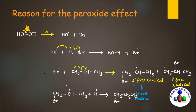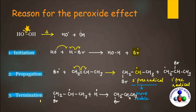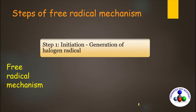This whole reaction completes in three steps. The first step is the initiation step, in which the Br free radical is formed. The second step is the propagation step, in which the Br free radical generates another free radical — the alkyl free radical. The final step is the termination step, in which the alkyl free radical combines with a hydrogen free radical to give the product. This whole mechanism is known as free radical mechanism.